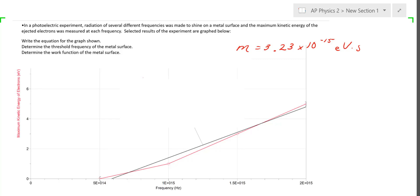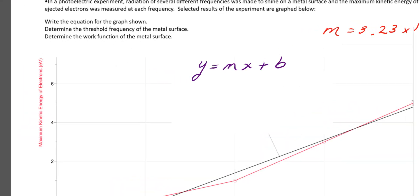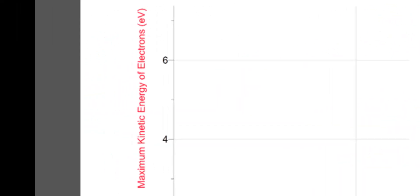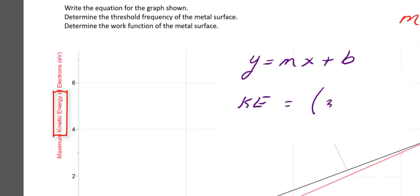So again, my slope is 3.23 times 10 to the negative 15 electron volt per second. Remember that general form is y equals mx plus b. What is y? y is the variable on the y-axis, but on my y-axis I have kinetic energy, so I substitute ke for y.